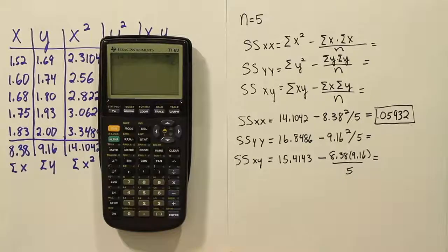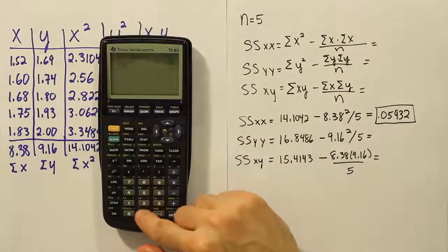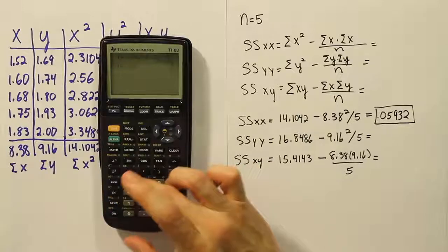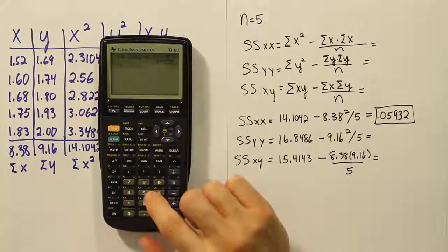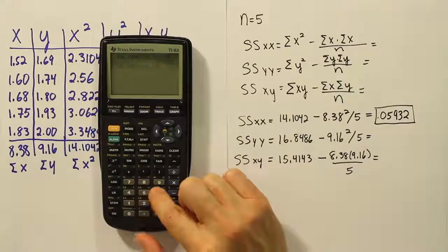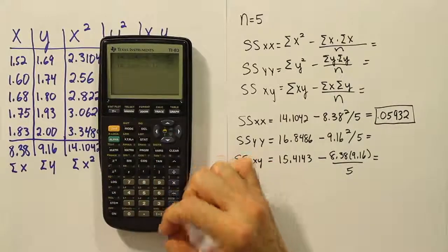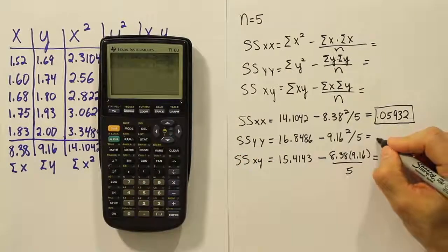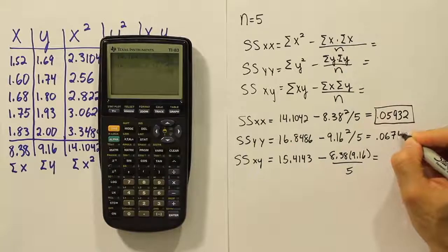Let's continue and do the one for Y now. So we'll have 16.8486 minus 9.16 squared divided by five. And when you're done, you get 0.06748.